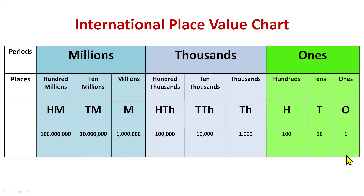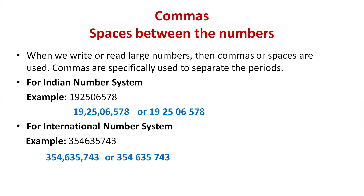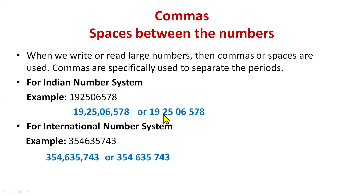Let's talk about commas. Commas help us read big numbers easily. In some books, instead of commas, numbers are separated by spaces. For the Indian number system, we insert commas to separate periods — after three digits one comma, then two digits, then two digits. So the pattern is: three digits, then two-two digits with commas.